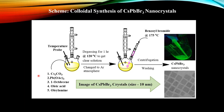To proceed with the synthesis, we have a cesium precursor and a lead precursor, which are metal salts, and we have a solvent in which the precursors will be dissolved — that is 1-octadecene. We also have two other organic compounds which help with binding to the solvent: they are oleic acid and oleylamine.